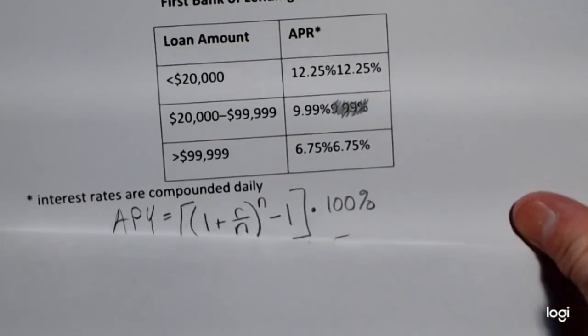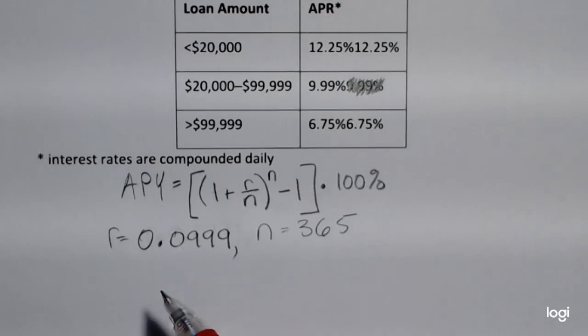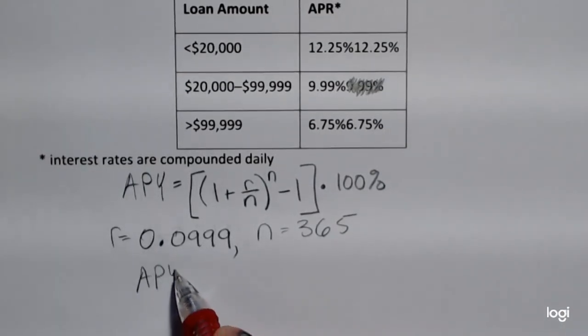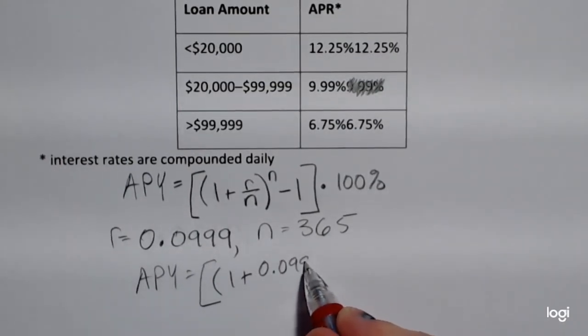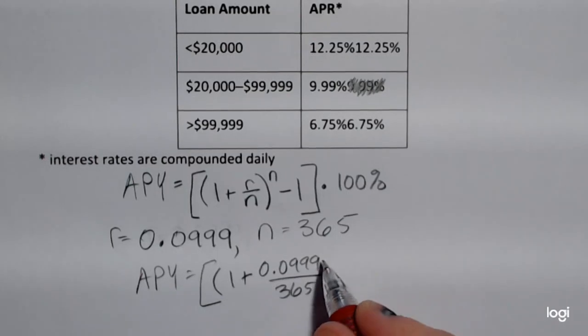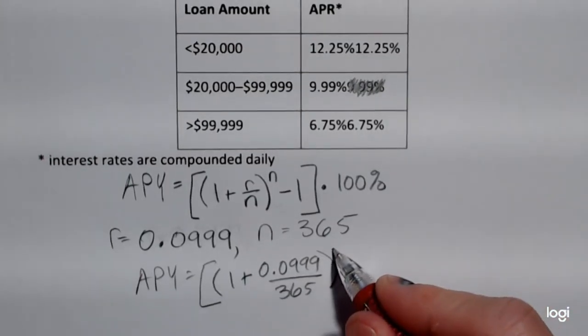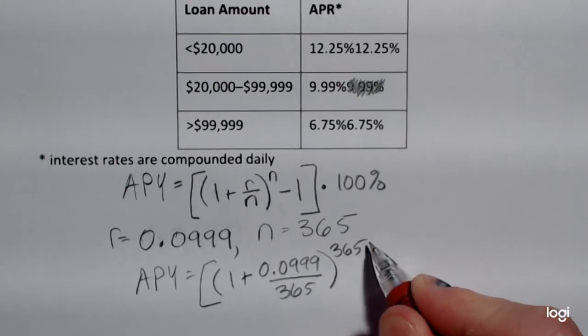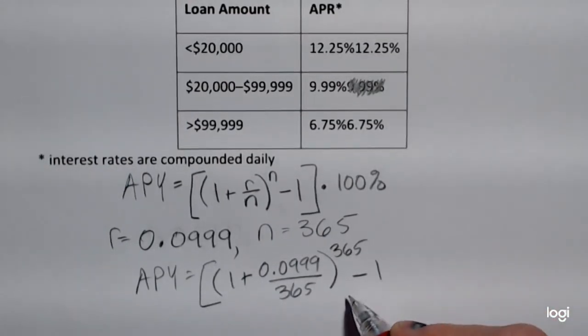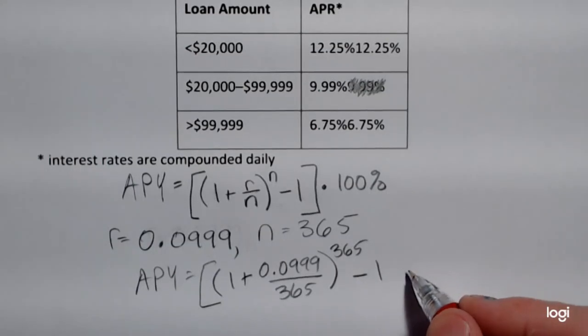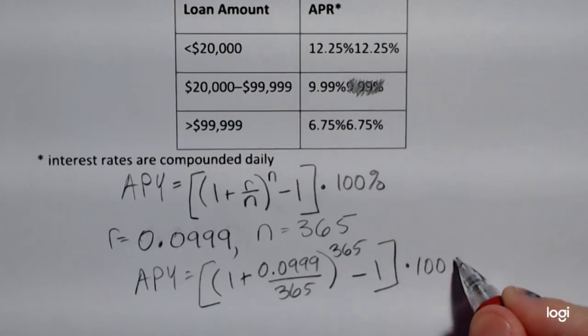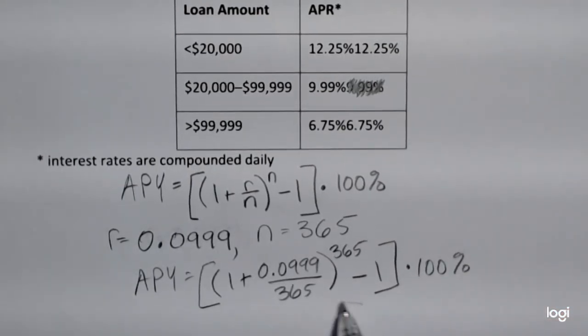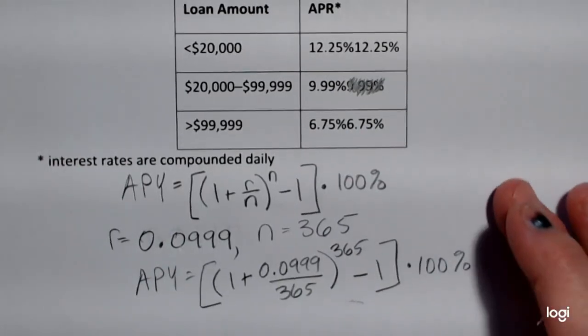So plugging into the formula, we get 1 plus 0.0999 over 365, close parentheses, raised to the 365th power, subtract 1 outside of the parentheses and exponent, close the outer parentheses, and then multiply that by 100%. We're going to get a decimal here and multiply that by 100% to get the effective interest rate or APY.